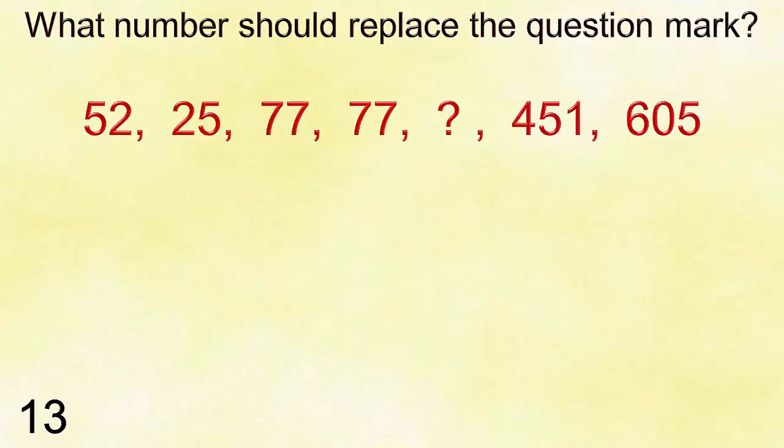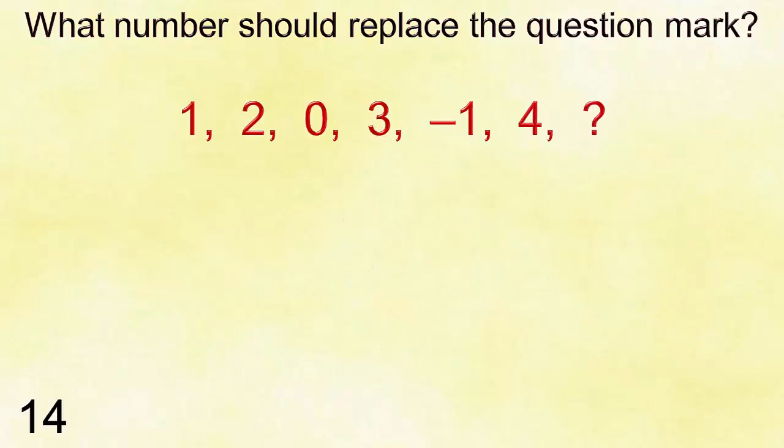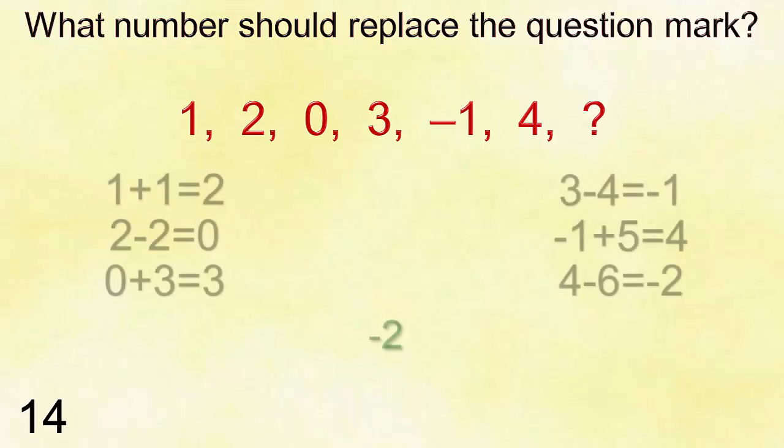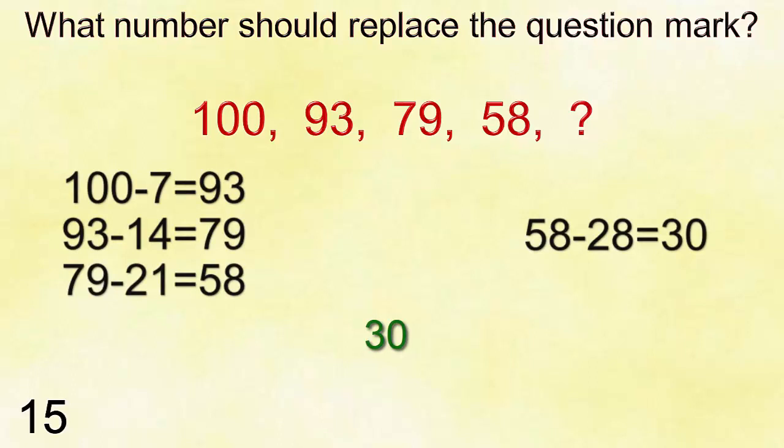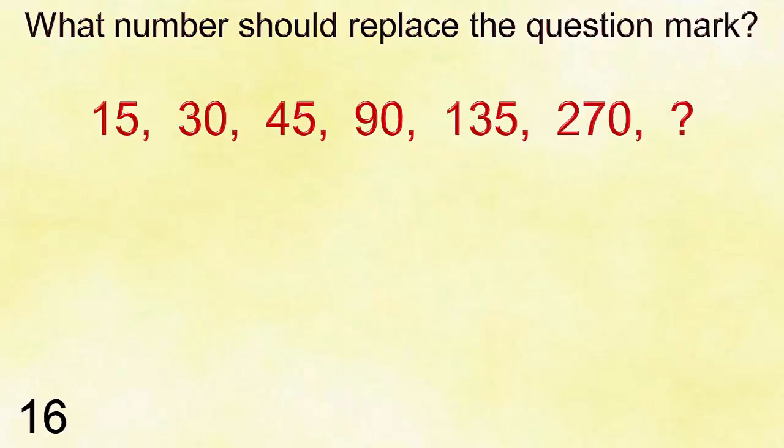Answer is thirty-four. Number thirteen: fifty-two, twenty-five, seventy-seven, question mark, four hundred fifty-one, six hundred five. Answer is thirty. Number sixteen: fifteen, thirty, forty-nine, ninety, one hundred thirty-five, two hundred forty-seven, four hundred five.